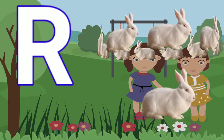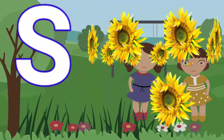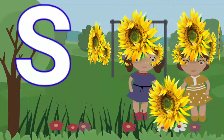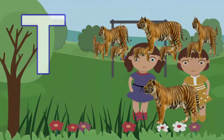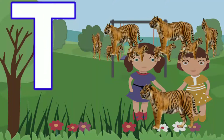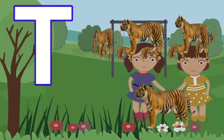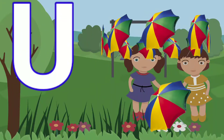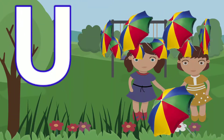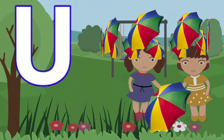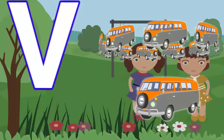S for sunflower, T for tiger, U for umbrella, V for van.